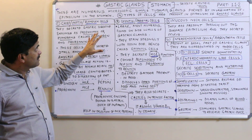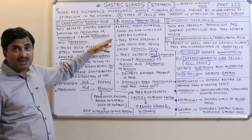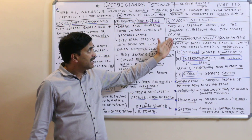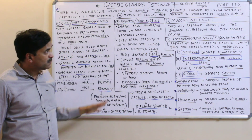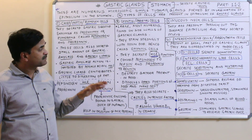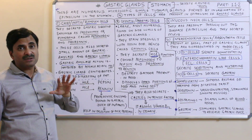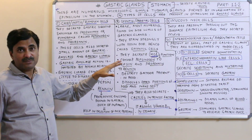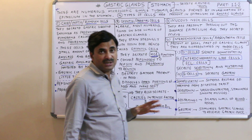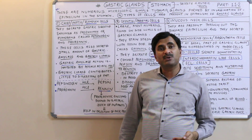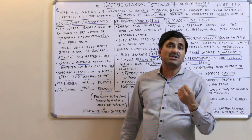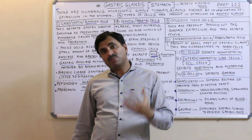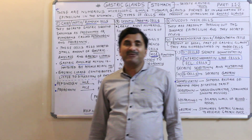To summarize, we discussed the gastric glands and the four types of cells in the epithelium: chief cells, oxyntic cells, mucous neck cells, and enteroendocrine (argentaffin) cells. This section is very important — questions from this topic have been asked at least seven to eight times in various exams. In upcoming videos, we will discuss the intestine, starting with the small intestine and then the large intestine.